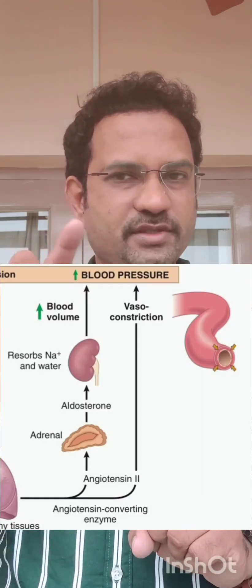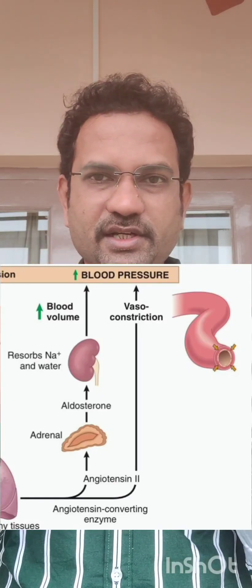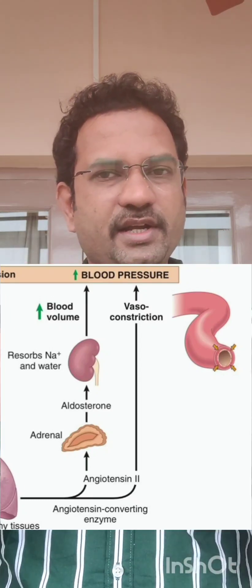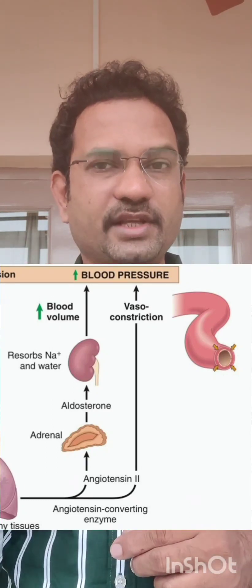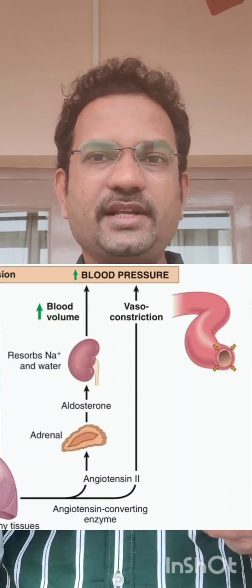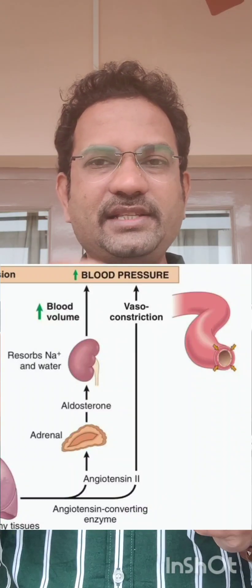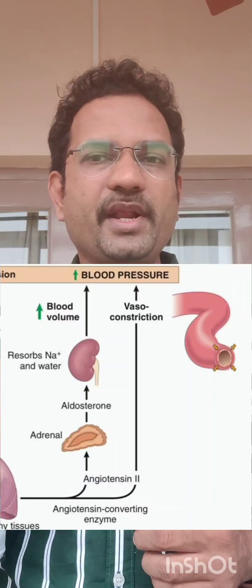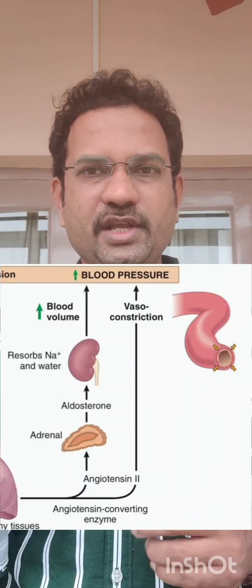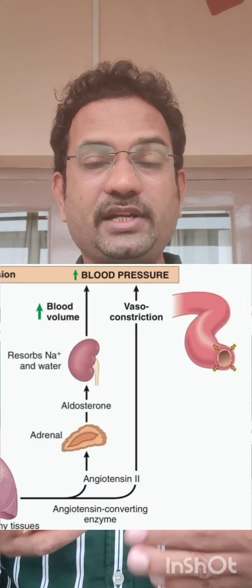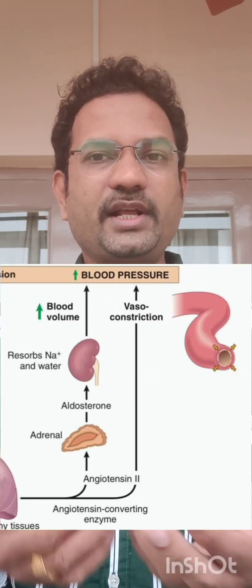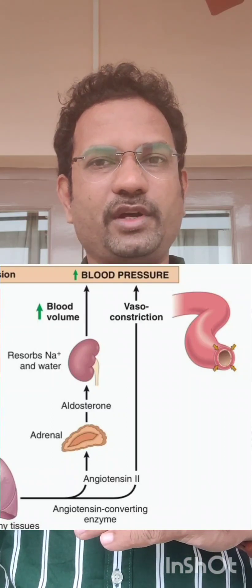Angiotensin 2 has two major functions. First, it causes blood vessel constriction — 'angio' means blood vessel, 'tension' means causing contraction. Second, it acts on the adrenal gland and increases the release of aldosterone. Aldosterone is a mineralocorticoid whose function is to increase the reabsorption of sodium and water, so sodium and water are retained, increasing blood volume.